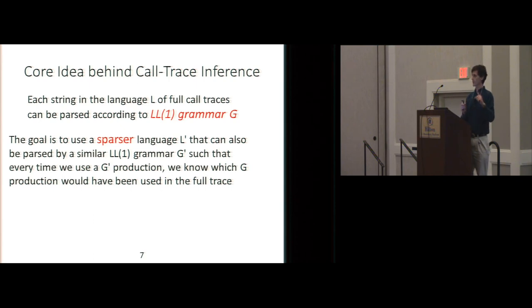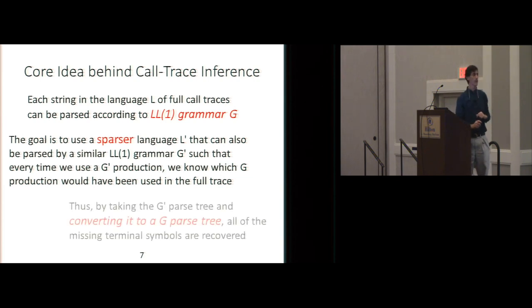So, the core idea is based on the observation that every, that you can arrange so that every string in the language of the full call traces can be parsed by an LL1 grammar G. Okay? So, I guess that's the theme of this session, right? In the last, I mean, I've been working using context-free models of abstract models of programs for a long time. And mostly, we don't really examine the structure of those grammars. The grammars are out there and we just use them and, in the previous paper, it was, you know, do something because it was an LCFL and do something designed for that. Here, the key thing is to make use of the fact that you can create an LL1 grammar. Okay? And then, we're gonna use a sparser language as the instrumentation language that can also be parsed by an LL1 grammar. We'll call that G prime. And not only that, G and G prime are gonna be so close that every time we use a G prime production, there'll be a corresponding G production. So, what that means is that if we parse the log call trace by the G prime grammar, we can go back to the parse tree for the G prime grammar, replace it with the G productions, and then that'll bring in all the missing symbols. Okay? It's been a very nice idea. We take the G prime parse tree, convert it to a G parse tree, and do the recovery that way.